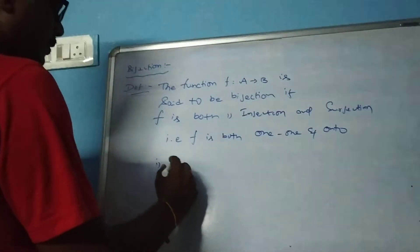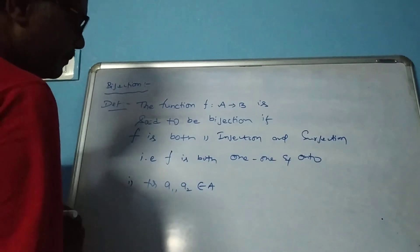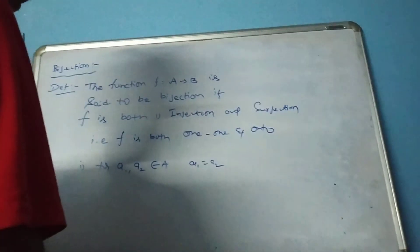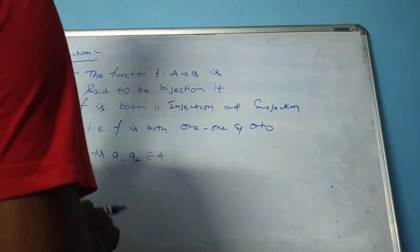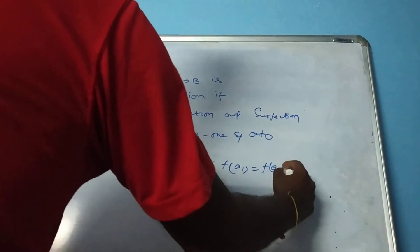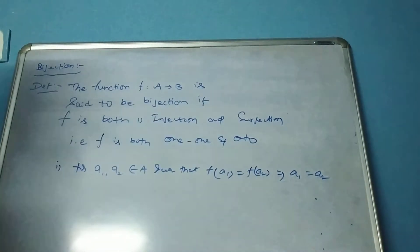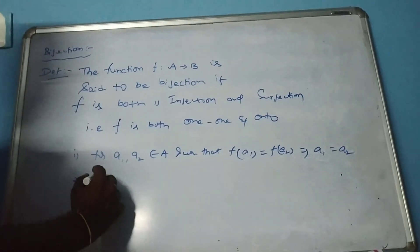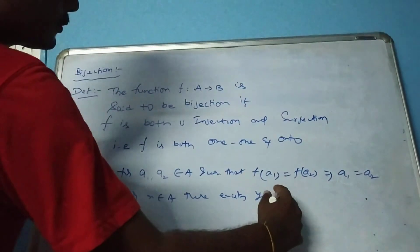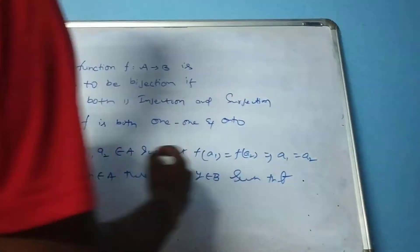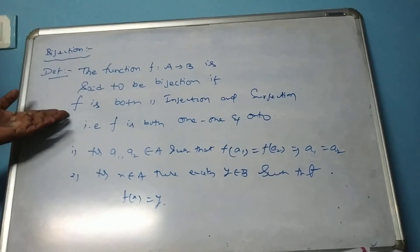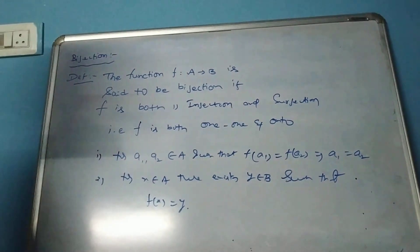That means: first, for a1, a2 belonging to A, F of a1 equals F of a2 implies a1 equals a2. Second, for every x belonging to A, there exists y belonging to B such that F of x is equal to y. Then F is said to be a bijection.